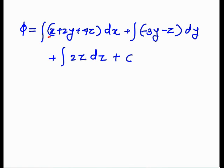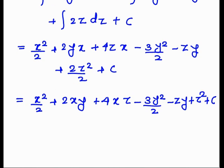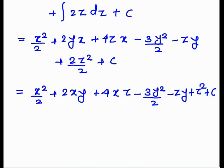Integrating: ∫(x + 2y + 4z)dx = x²/2 + 2xy + 4zx; integrating −3y gives −3y²/2, integrating −z gives −zy; integrating 2z gives 2z²/2 = z². Therefore phi = x²/2 + 2xy + 4zx − 3y²/2 − zy + z² + c.